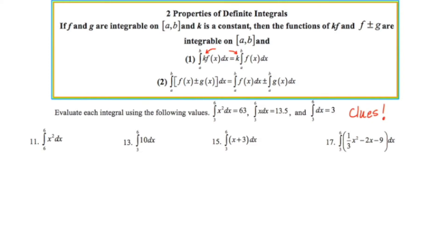Number 11: evaluate the definite integral of x squared from 6 to 6. This requires absolutely no work because the lower and upper limits of integration are the same value. The area under this parabola from 6 to 6 would have no width, which means we have an overall area of 0.